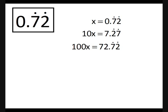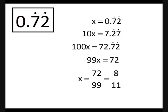Notice now that both x and 100x have the same decimal repeating — 7, 2, 7, 2. So what we do is subtract x from 100x, and the decimal vanishes. 100x minus x is 99x. 72.7272... take away 0.7272... is 72. Dividing by 99, we get x equals 72 over 99, which cancels down to 8 elevenths.